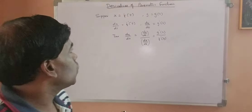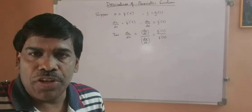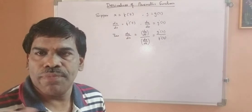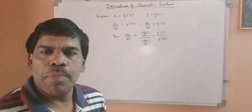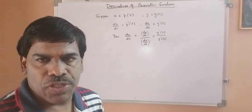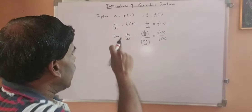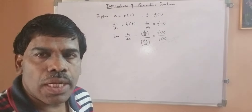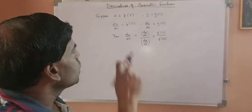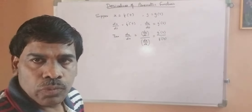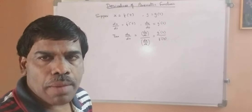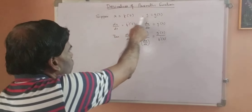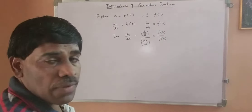Students, today I am going to teach you how to differentiate a parametric function. So far, what you have seen is y as a function of x, or x as a function of y, and thereby we could find their differentiation. Now here the case is like this: x is a function of some other variable t, and similarly y is also a function of t. So this t we call the parameter.